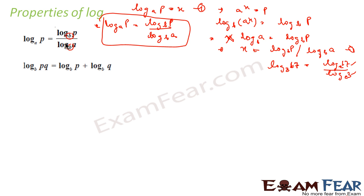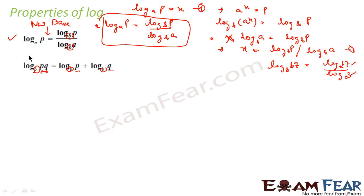The next property: log of pq, where the base will be constant throughout. If you say log pq to some base, that is nothing but log p plus log q with the same base. This is one of the critical properties of why log is used — because you are converting multiplication to addition.